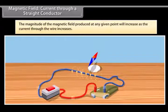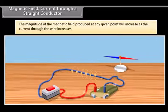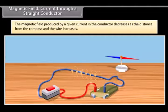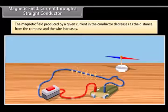Now, try moving the compass away from the current passing through the wire. You will see that the magnetic field produced by a given current in the conductor decreases as the distance from the compass and the wire increases.